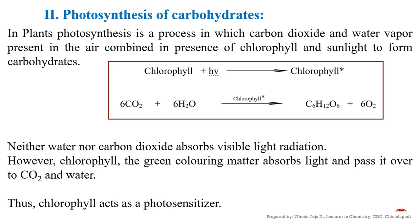In the photosynthesis example, chlorophyll is the molecule that absorbs light and transfers its energy to either carbon dioxide or water. Neither water nor carbon dioxide absorb visible light radiation — it is the chlorophyll that absorbs light and passes that energy to these molecules. Hence, chlorophyll acts as a photosensitizer.